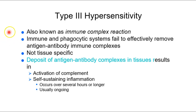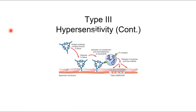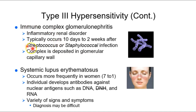Type 3 hypersensitivity involves antigen-antibody complexes depositing into your tissues. For example, after having strep, your body breaks down the bacteria — those bacteria are gone — but their antigens and your antibody complexes remain and deposit into tissue. The example to know is immune complex glomerulonephritis: you're trying to excrete the antigen-antibody complex through the kidneys, but it gets stuck in the glomerulus, and your immune system attacks and destroys your kidneys.